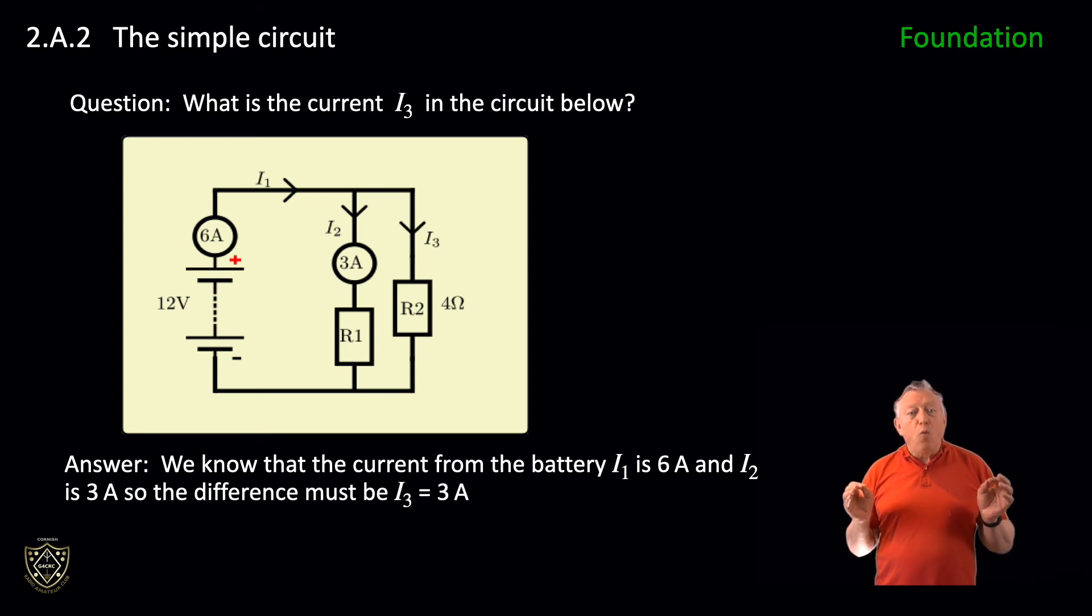So, restating, where a supply feeds more than one component or device, the total current is the sum of the currents in the individual items.